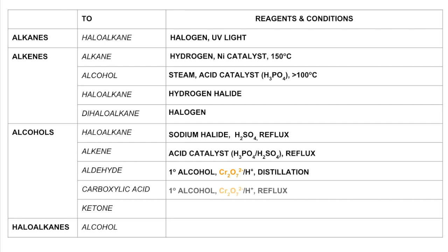To make an alcohol into a carboxylic acid, you still use a primary alcohol with acidified dichromate ions again, but this time you would use reflux heating — so your condenser would be in a vertical position, as opposed to on a slant as in distillation.